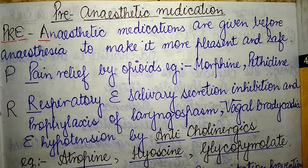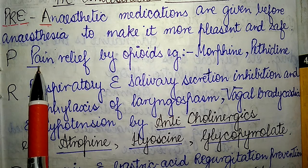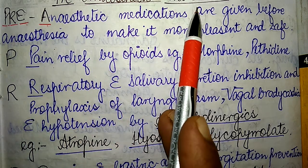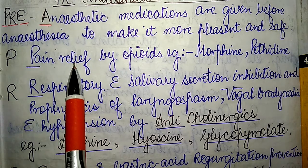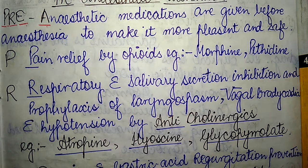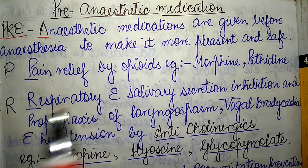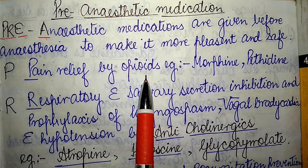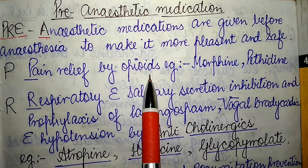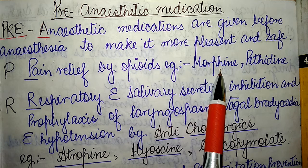The P of PRE refers to pain relief. The first effect of pre-anesthetic medications is that they cause pain relief, most commonly provided by opioid drugs. Common examples of this category include morphine and pethidine.